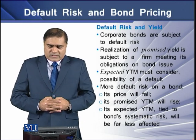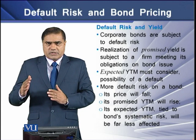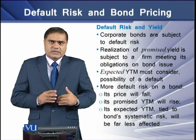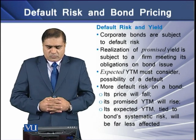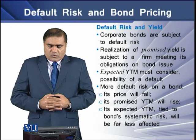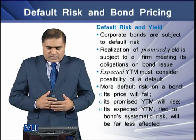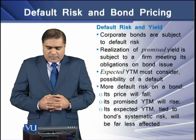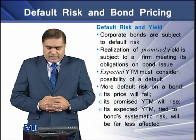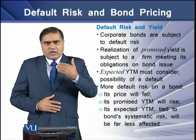Realization of the promised yield is subject to the firm meeting its obligations on the bond issue. Expected yield to maturity must consider the possibility of default risk. If there are more chances of default on a bond, then the price of the bond will fall, the promised yield to maturity will also fall, and the expected yield to maturity, which is tied to the bond's systematic risk, will be far less affected.